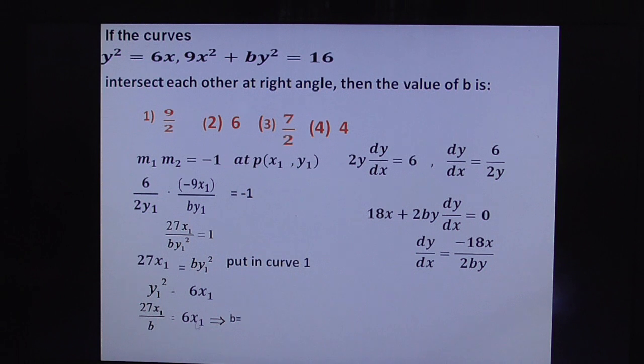x₁ cancels out. b equals 27/6, which simplifies to b = 9/2. Therefore, the first option is your answer.